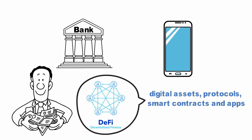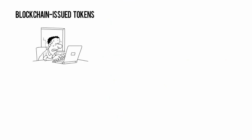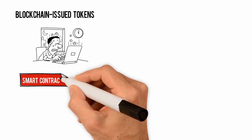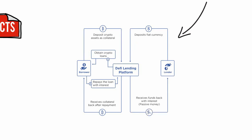DeFi apps exist as digital assets, protocols, smart contracts, and apps that run on blockchains, with the flexibility and capabilities to develop on them — like Ethereum. Stablecoins are one famous example: these are blockchain-issued tokens designed to hold on to specific values, such as Tether. Developers can also create sophisticated smart contracts that automate complex financial transactions by removing the need for a middleman to verify them — for example, open lending protocols.